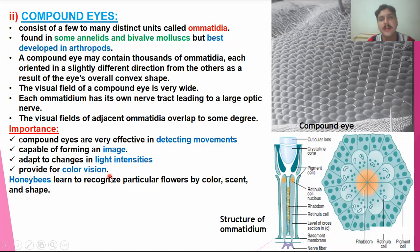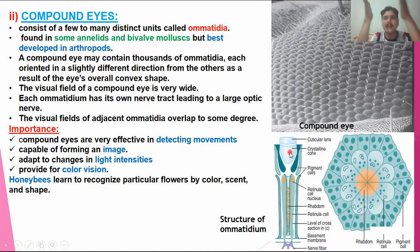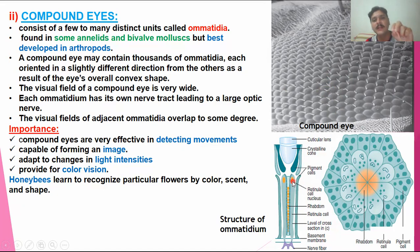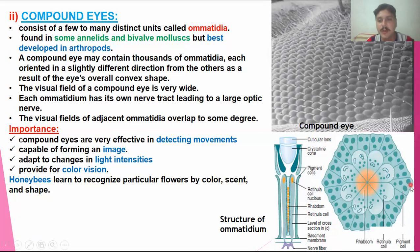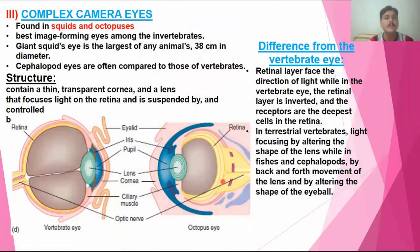Inside each ommatidium, there is a crystalline cone, and light moves through it ultimately to retinal cells — the light-sensitive receptors. When the retinal cells receive the stimulus of light, the light is moved toward the rhabdom, which is the structure that properly receives the light, and the message follows for image formation. This is the cross-section of the ommatidium structure.